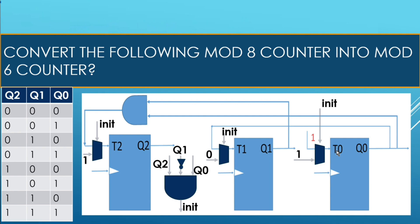When q2, q1, q0 are 1, 0, and 1 — state 5 — 'in' goes high. Since we want the next state to be 000, and we are using T flip-flops: q2 is currently 1 and we want it to go to 0, so I apply a 1 to T2 to toggle it. This 1 signal passes through the mux to T2.